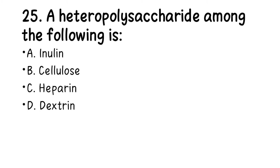Number 25. A heteropolysaccharide among the following is: A. Inulin, B. Cellulose, C. Heparin, D. Dextrin. The right answer here is C, heparin.